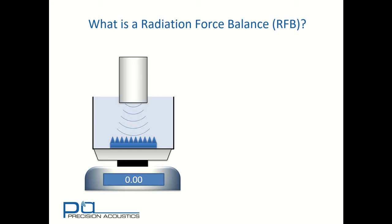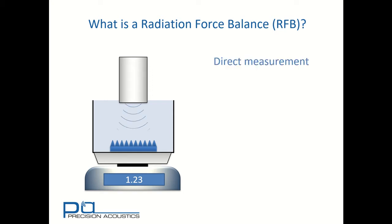We arrange for an ultrasonic transducer to be configured so that its field radiates onto the target. When the ultrasonic transducer is switched on, there is a momentum exchange that occurs when the ultrasonic wave encounters the target. This is translated as a downward motion and therefore perceived by the balance as an effective mass. Please note that this is a direct measurement. There is a direct relationship between the ultrasonic power and the effective mass perceived on the balance.